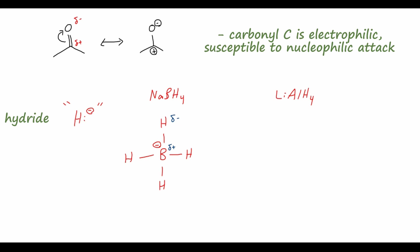Since hydrogen is more electronegative than boron, hydrogen carries the partial negative charge in this compound. We're normally used to seeing hydrogen with a partial positive charge because carbon, oxygen, nitrogen, and halogens are all more electronegative than hydrogen. But with semi-metals or metals such as boron or aluminum, which are actually less electronegative than hydrogen, we get a sort of H⁻-type nucleophile. The structure is very similar with aluminum hydride, just with an aluminum center.